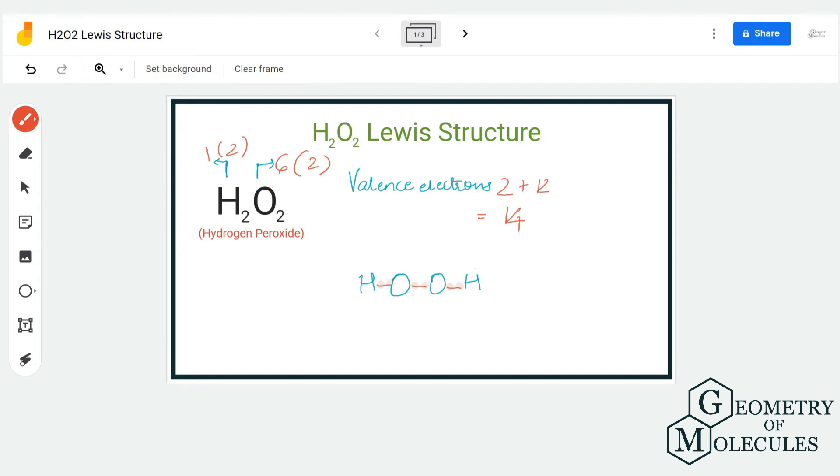You can see here the octets for hydrogen atoms are now complete because each has two valence electrons in its outer shell. The rest of the electrons will be arranged around oxygen atoms to check if it helps in completing their octets.